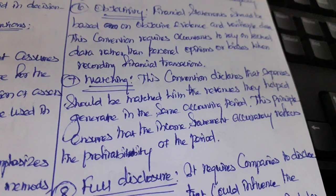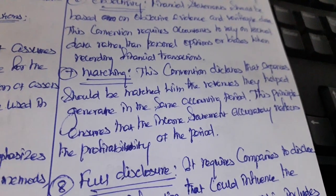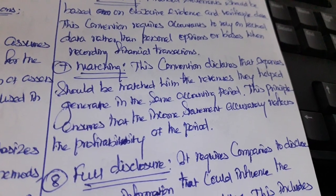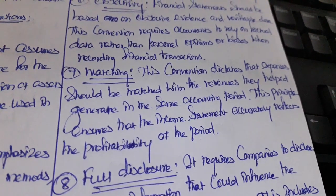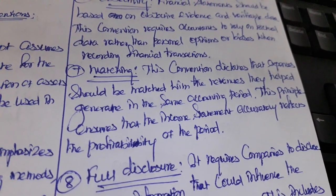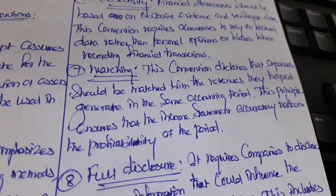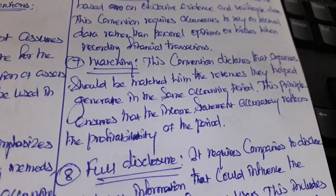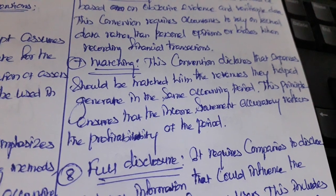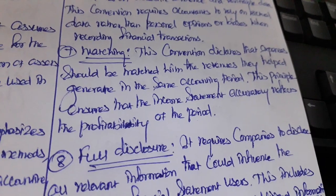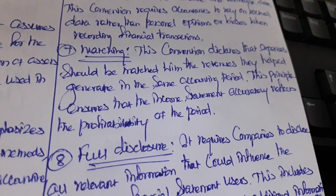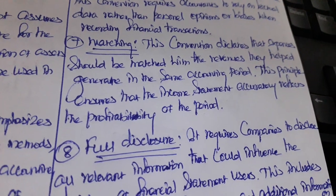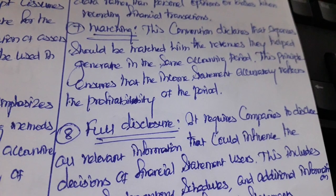The matching convention dictates that expenses should be matched with the revenues they helped generate in the same accounting period. This principle ensures that the income statement accurately reflects the profitability of the period. As per this convention, expenses should be matched with revenues in the same accounting period, so we can accurately calculate our organization's profitability.